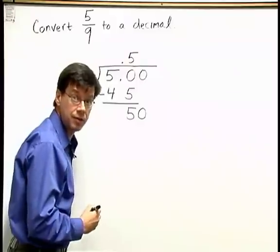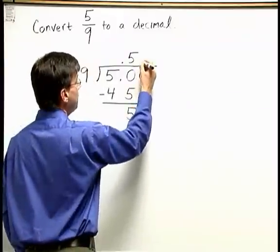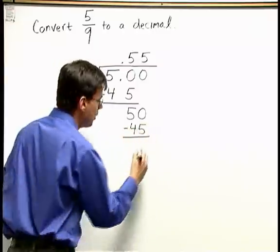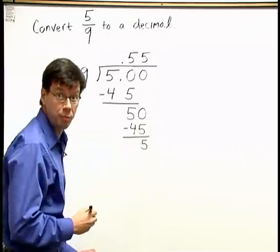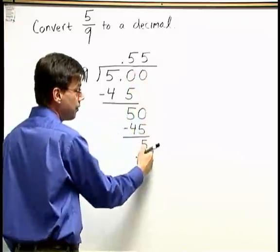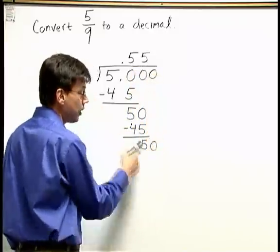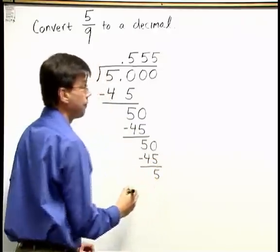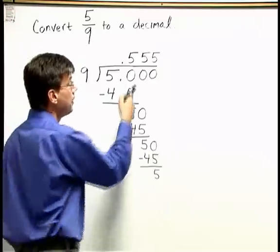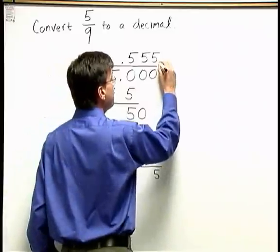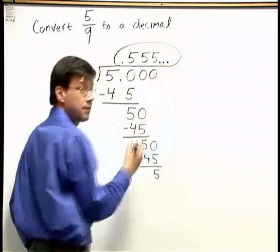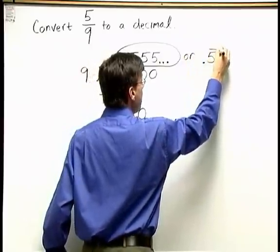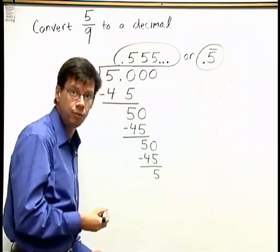Adding another 0 and bringing it down, I ask again: how many times does 9 go into 50? It goes 5 times again — 5 times 9 is 45, and 50 minus 45 is 5. I can see now that my decimal is repeating. If I add another 0 and bring it down, I'll get 9 going into 50 again — another 5. This process will go on forever. The decimal for 5 ninths is the repeating decimal 0.555... or 0.5 with a bar over the 5.